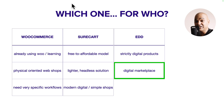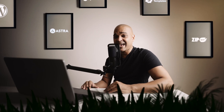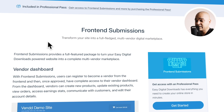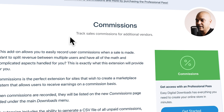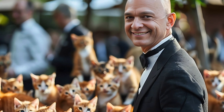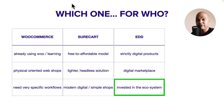Next, if you want to build a digital marketplace, Easy Digital Downloads is what you want. If you dream of creating the next Amazon but for digital products, with EDD you can achieve this with two add-ons: Front-end Submissions, to transform your site into a full-fledged multi-vendor digital marketplace, and Commissions, to track sales commissions for additional vendors. You can become the next digital Jeff Bezos.